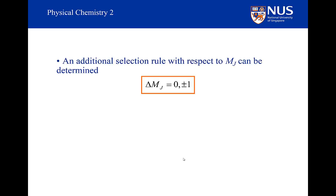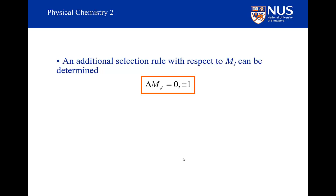There is a selection rule associated with Mj as well, and that is that delta Mj, the change in the Mj quantum number, must be equal to zero or plus or minus one. However, as the rotational energy does not depend on the Mj quantum number, this selection rule has no effect on the spectrum.